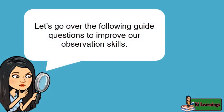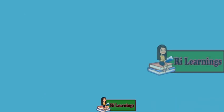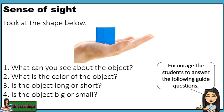Let's go over the following guide questions to improve our observation skills. Sense of sight — look at the shapes below. Encourage the students to answer the following guide questions: 1. What can you see about the object? 2. What is the color of the object? 3. Is the object long or short? 4. Is the object big or small?